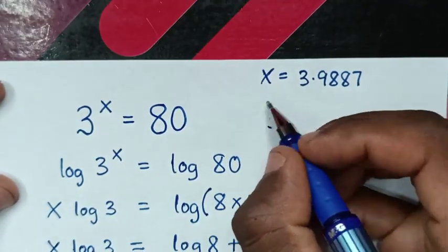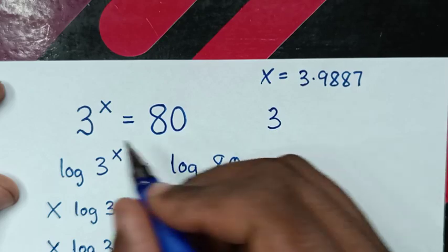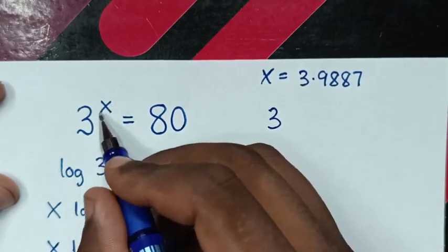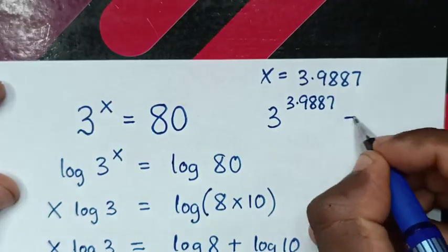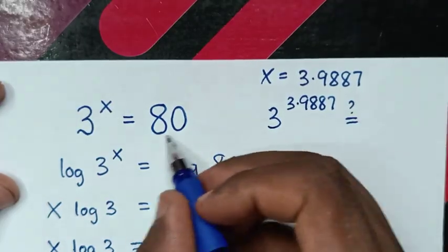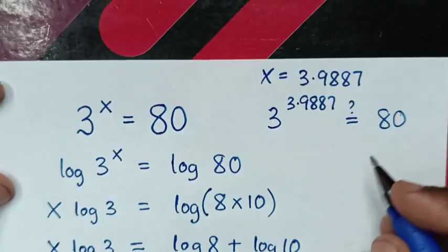So it will be 3 power of x, where x is 3.9887. Is it equal to 80?